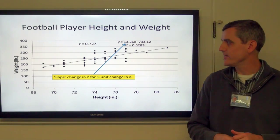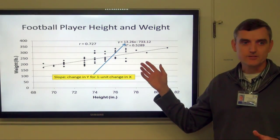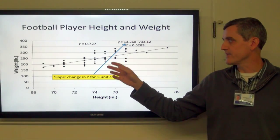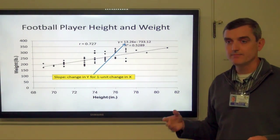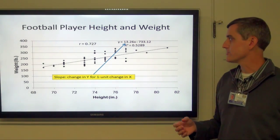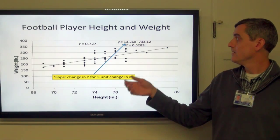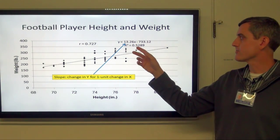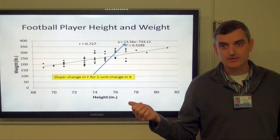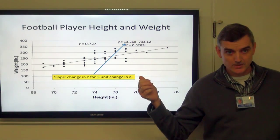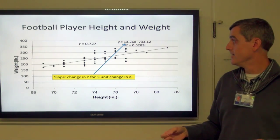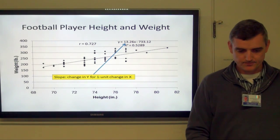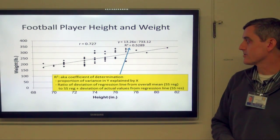The regression line minimizes the distance between the actual observations and the line. It's generated by the computer using something called least squares analysis. What it boils down to is the equation for the line — for a 1-inch increase in height, the typical increase in weight is about 13 pounds for a professional football player. r squared explains about half of the change.